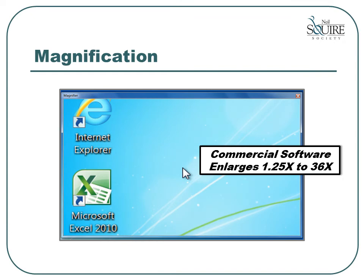Alternatively, there are commercial software programs which provide much smoother magnification. These programs can enlarge anywhere from 1.25 times to 36 times, and can also provide full screen magnification, meaning the magnified area covers your full screen. You are working with a virtual screen which might be six times the size of your actual screen. When you move your mouse, you are just seeing a small part of the full screen magnified. It is possible to magnify elements so that an icon might take up your whole screen, but if someone requires this level, it may be time to move to another output source, as it becomes very difficult to read text smoothly when you cannot see more than a couple of letters at a time.